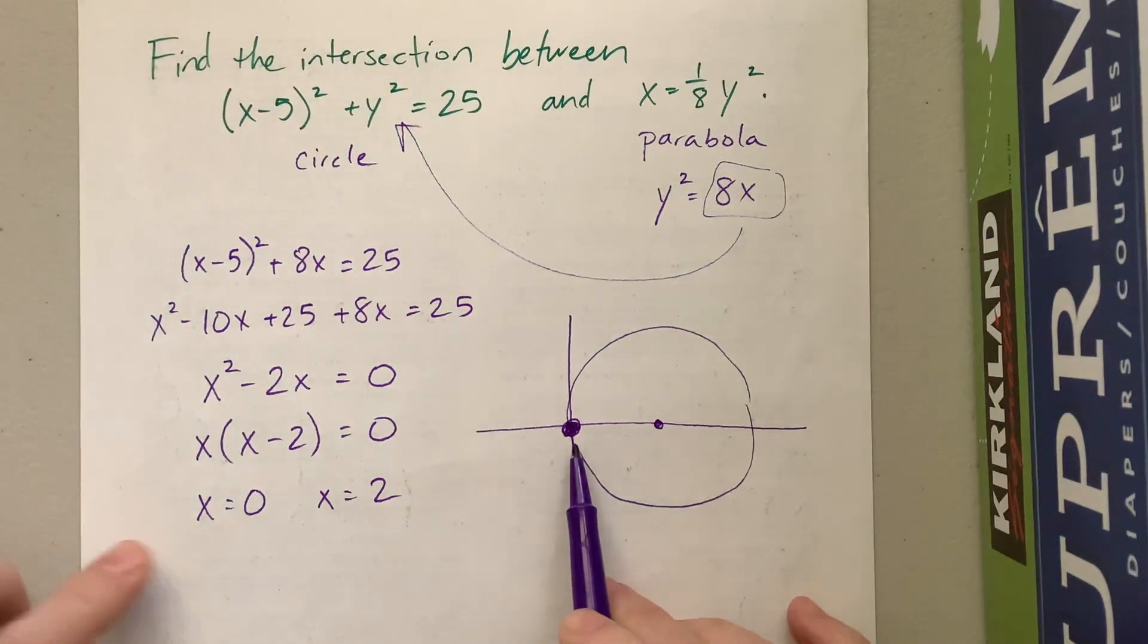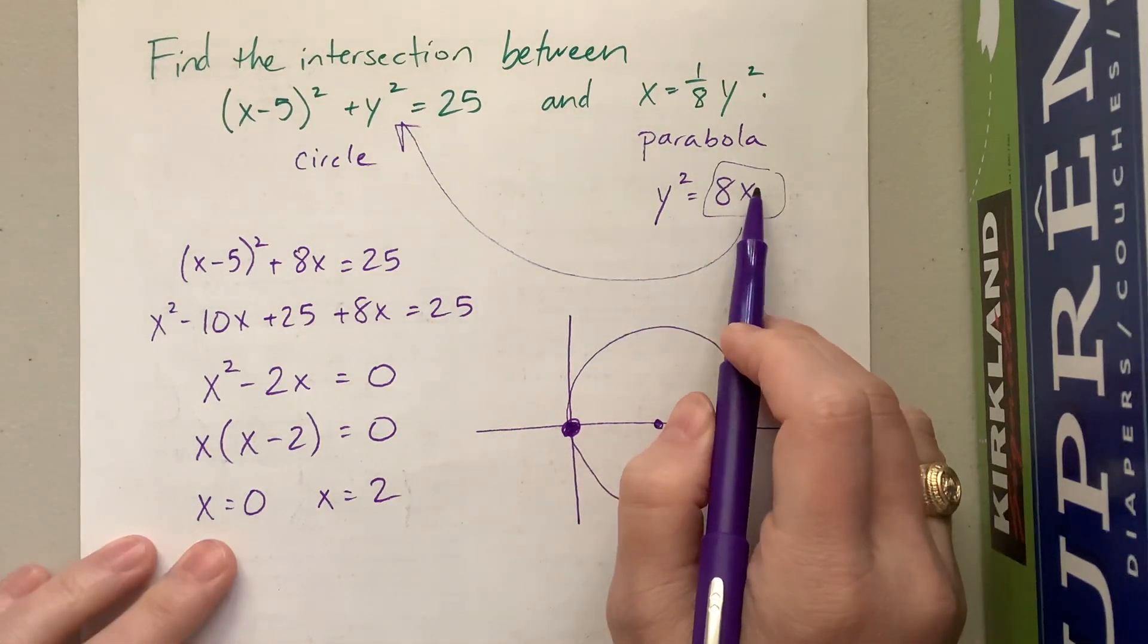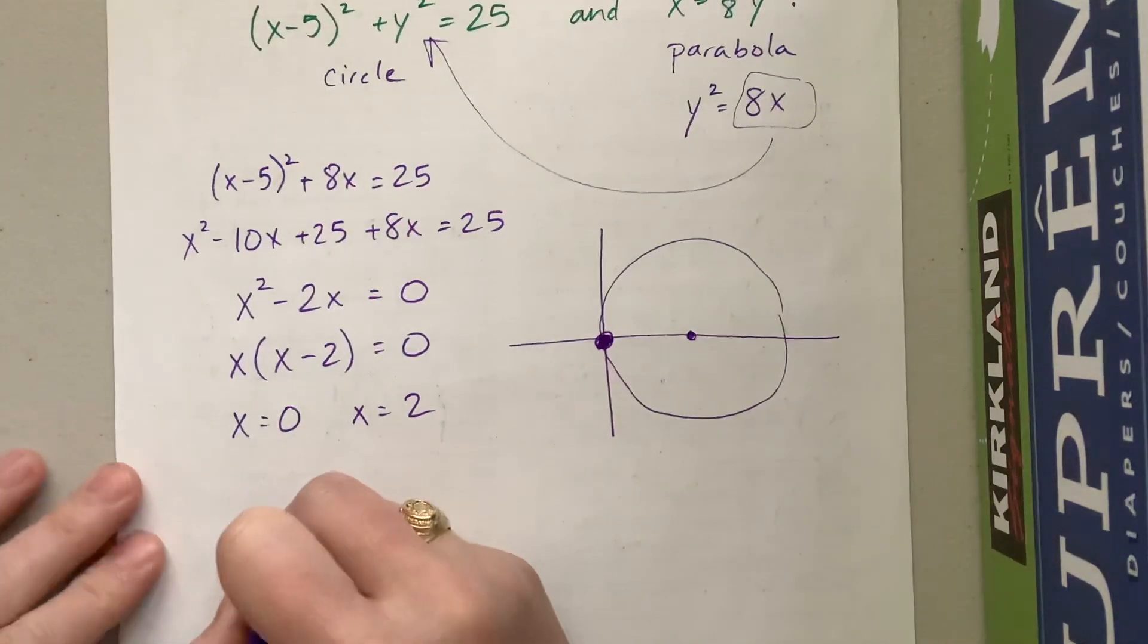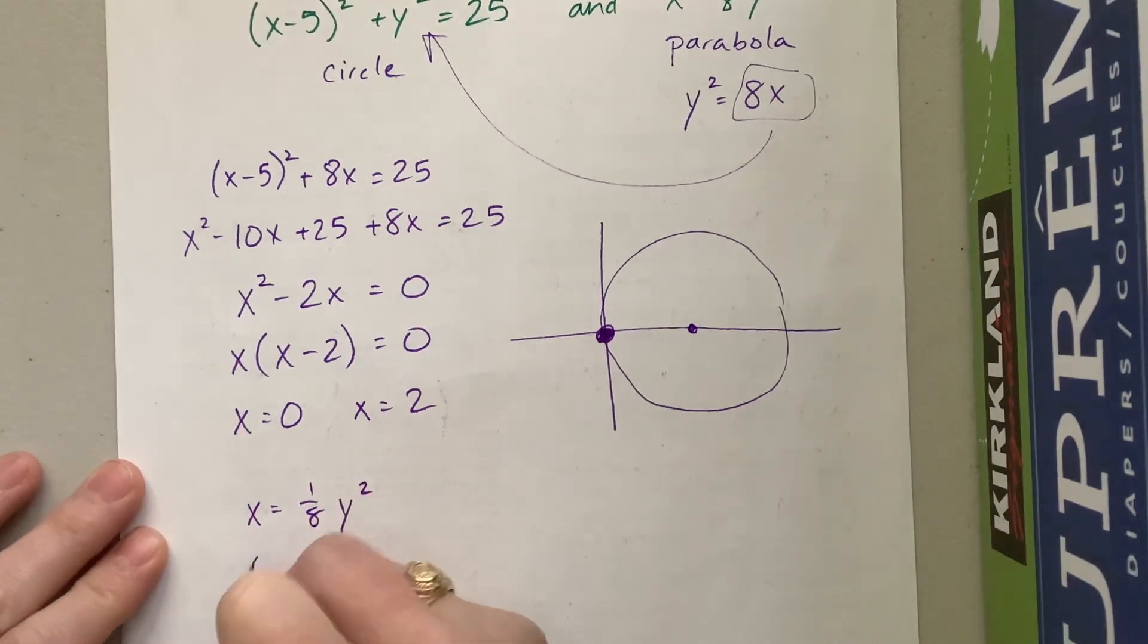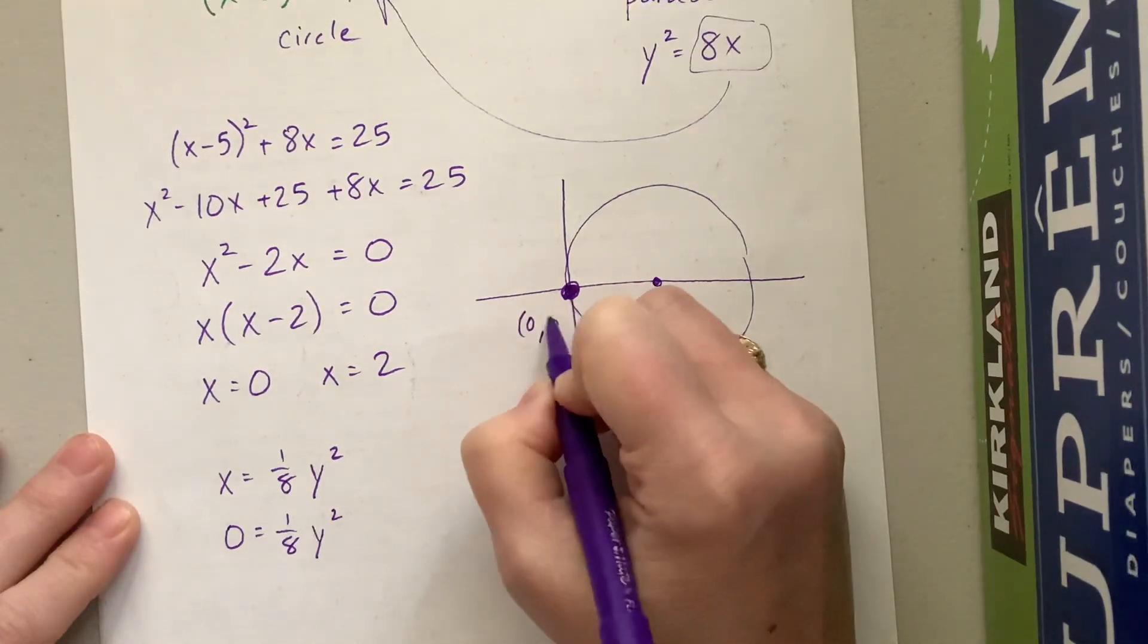Then they tell me that it intersects at 0. Well, if it intersects at 0 on that circle, that's going to be the point (0, 0). Let's check over here. If I plug in 0 for x, so I have x = 1/8 y². 0 = 1/8 of y². The only way to get 0 is for that to be 0. So we have this point (0, 0) right here.